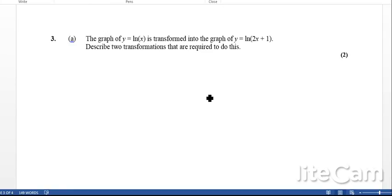Okay, so next question, we've got a graph which is transformed, so ln x is transformed into y = ln(2x + 1). There are two transformations that are required to do that. First off, we can look at this thing here, well, if we change x into 2x, that can be described as a stretch scale factor of a half parallel to the x-axis. So basically, it's kind of squashing up the function.